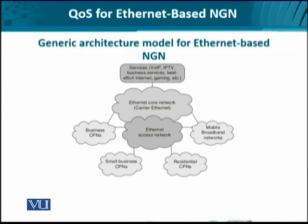Let's look at the overall generic architecture for Ethernet-based NGNs. Ethernet is not going anywhere anytime soon, and we need to understand its importance from the access side as well as the core side. You see here that the customer premises network — whether corporate, residential, or even mobile broadband networks — are connected to the Ethernet network. The Ethernet network, both on the access side and the core side, is required to ensure quality of service mechanisms for voice over IP, IPTV, and other interactive multimedia traffic flows.